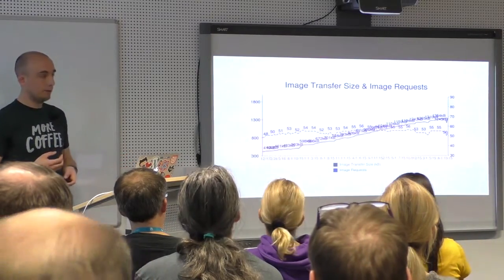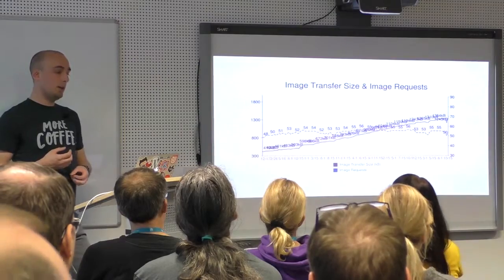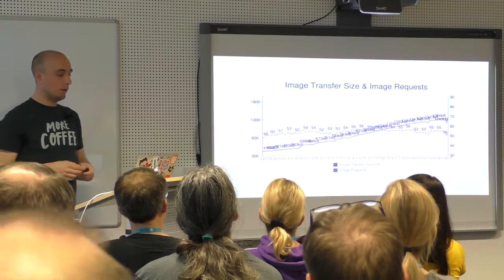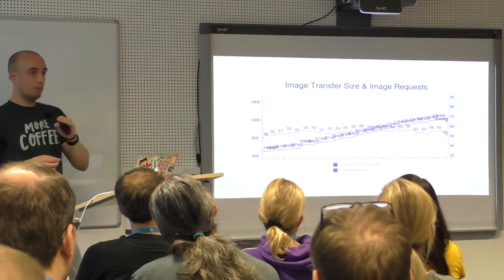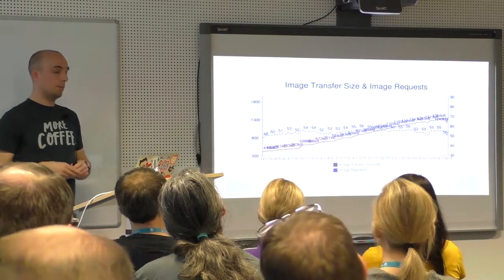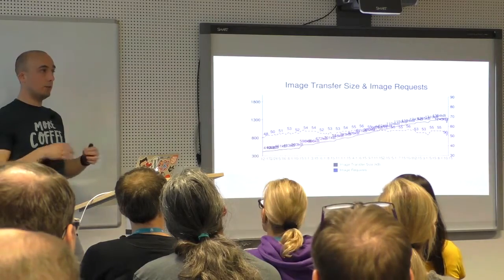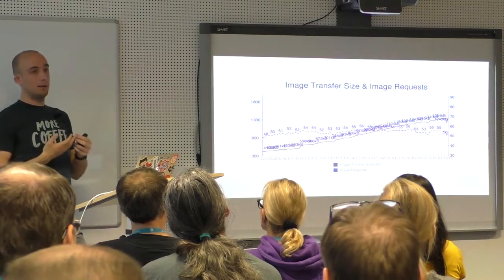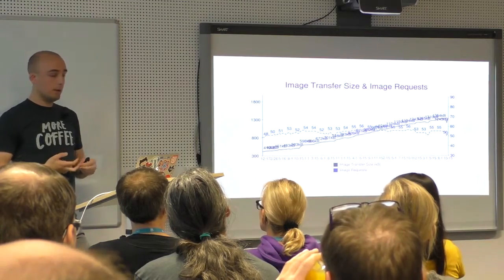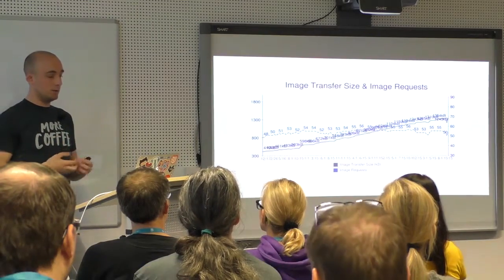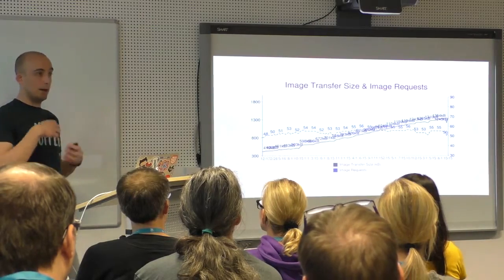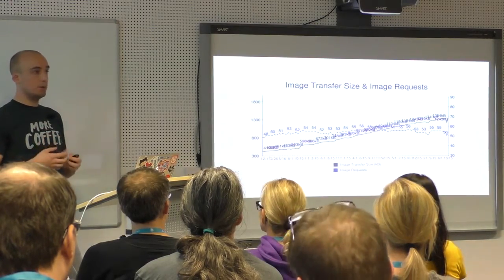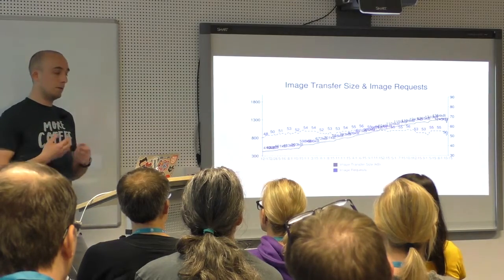The number of images per page has stagnated over the past years, but the size of the average image is always going up. That's because cameras are getting better — the cameras in our phones are always improving — which results in larger images ending up on the web. More images, larger images, makes for larger page loads.